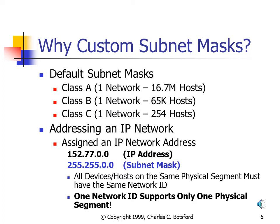When addressing our network, say we've been assigned the address 152.77.0.0 — a Class B address with the default subnet mask 255.255.0.0. This subnet mask indicates the first two octets are the network ID and the last two octets are the host ID. One key rule of IP addressing is that all devices on the same physical segment must have the same network ID as specified by the subnet mask. With only one network ID, that allows us only one physical segment — meaning 65,000 hosts all on one physical segment.